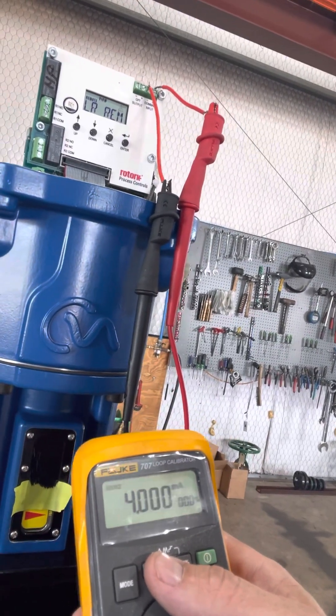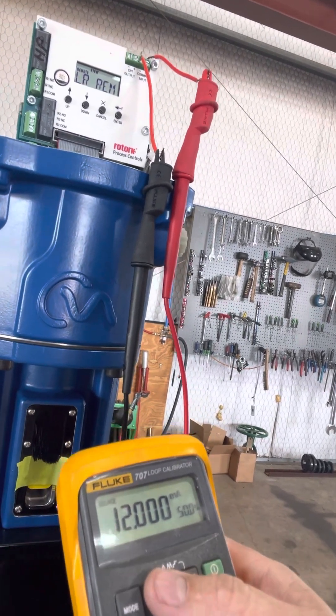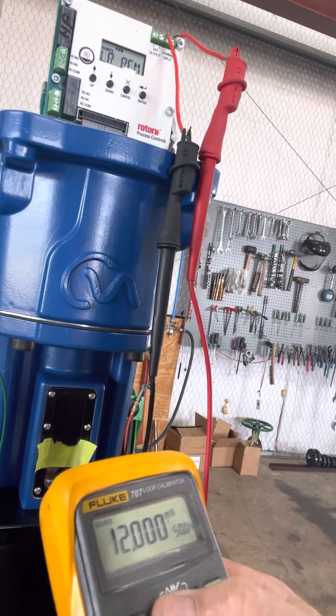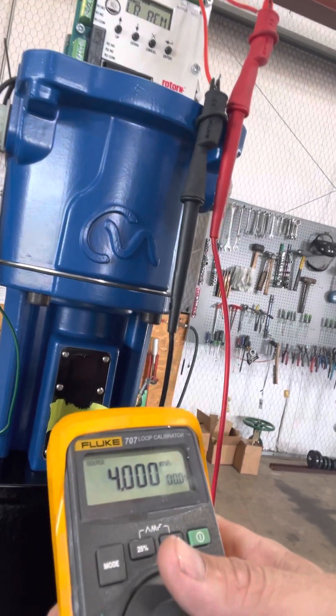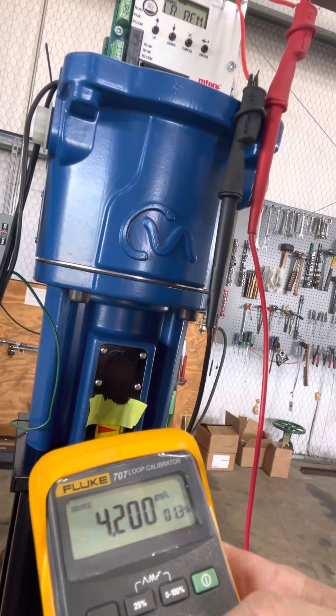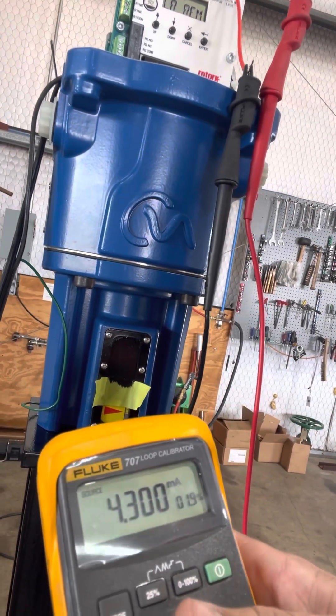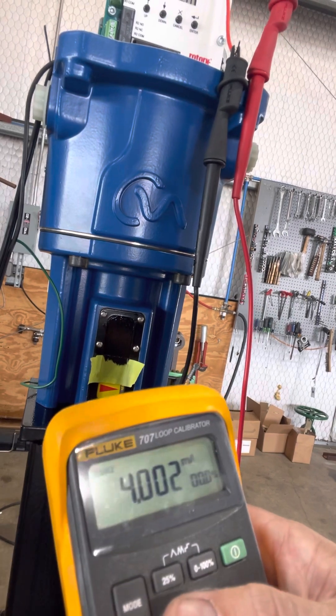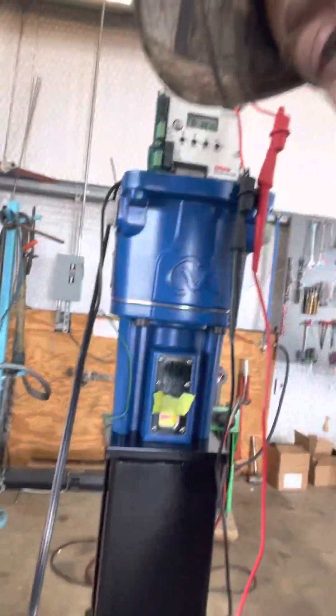This gives a 4 to 20 signal. 25 percent, 50 percent, 75. Now we're just going to go back to 4. And then you can tell just by barely moving it that the actuator is moving. Well, I can tell because I can hear it. I'm not sure if y'all can hear it. Even at 4.1 it moves.